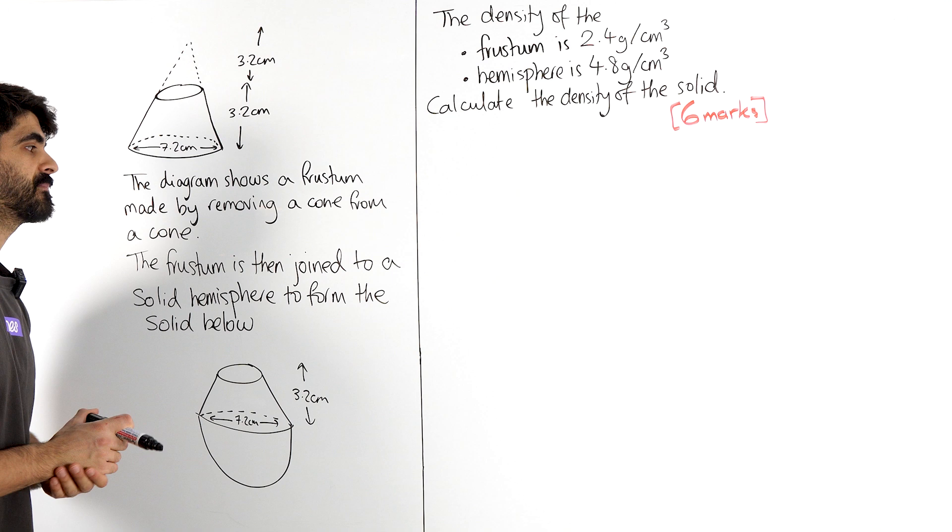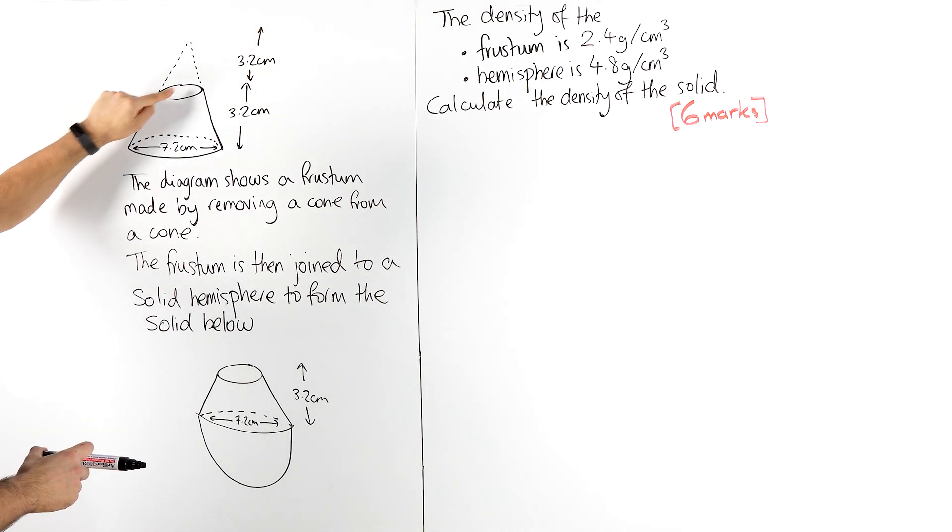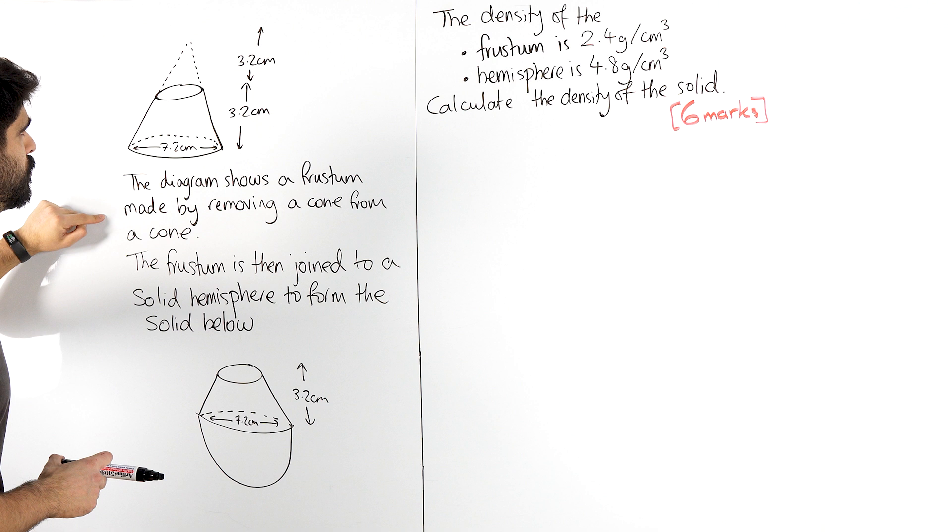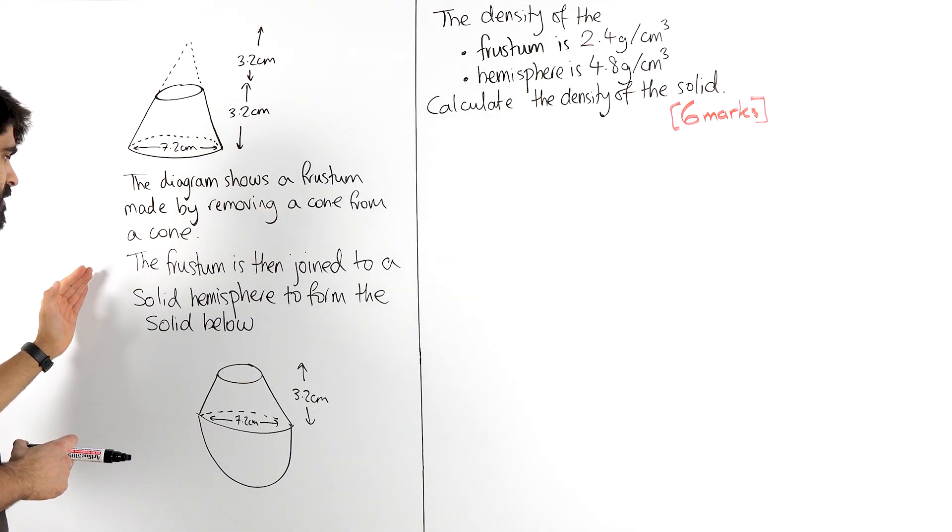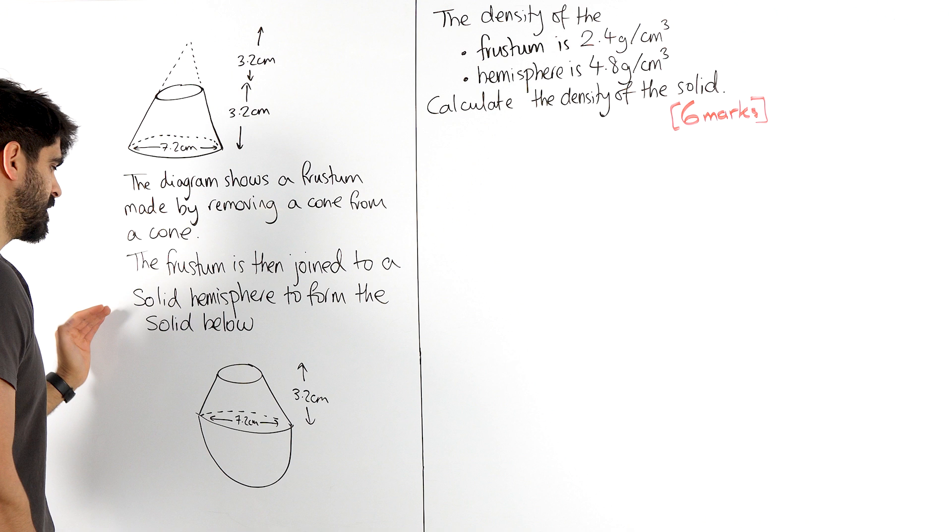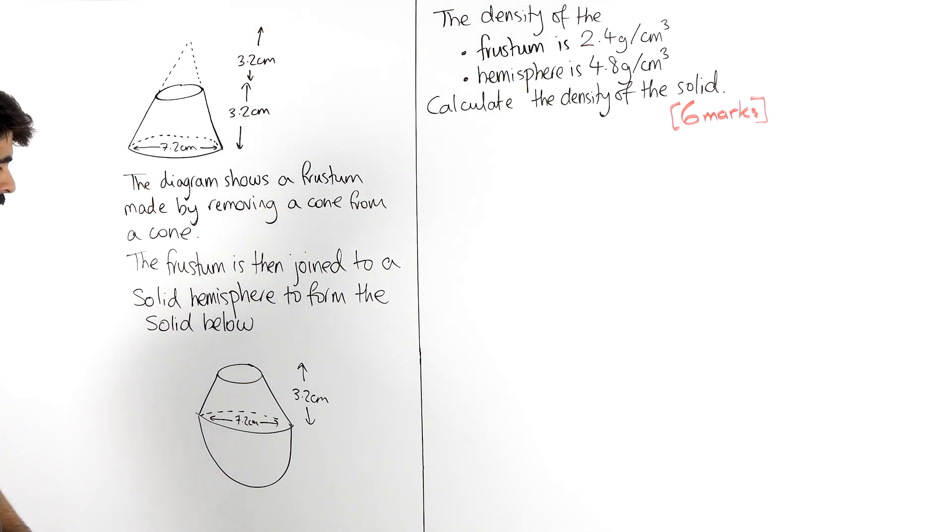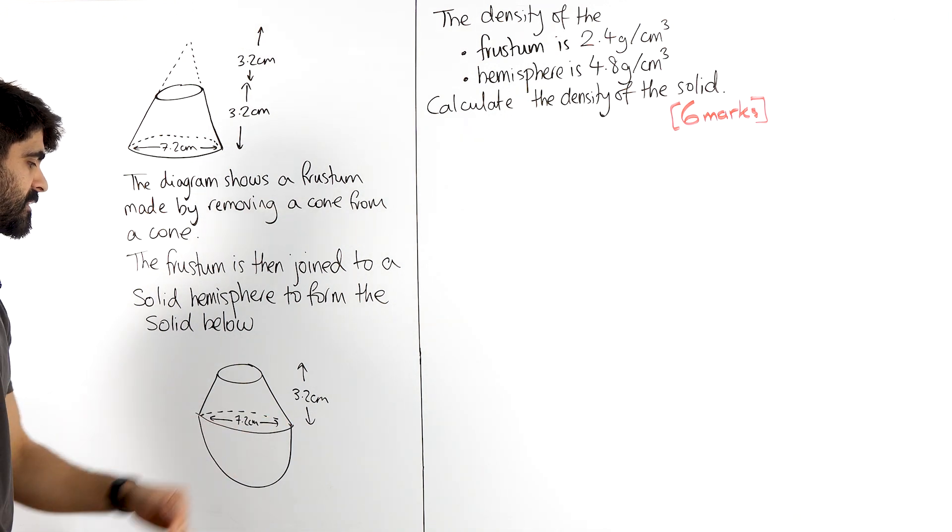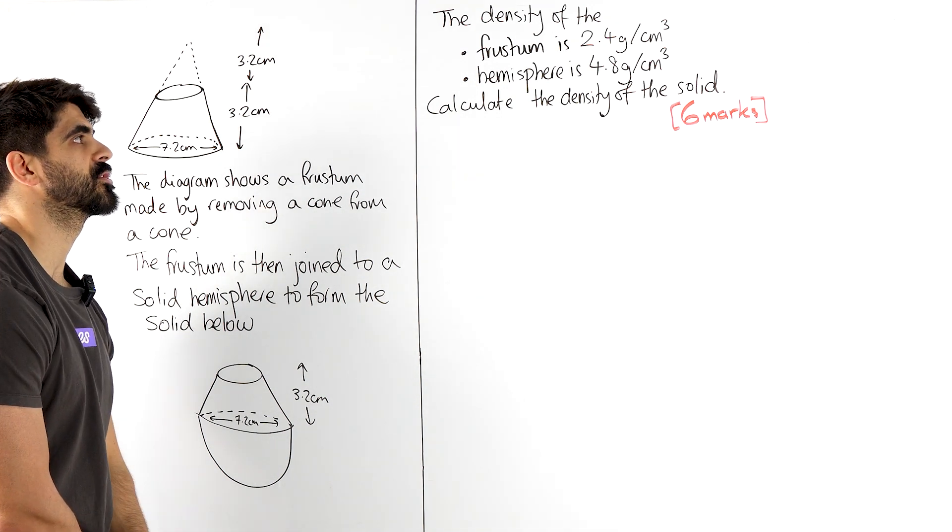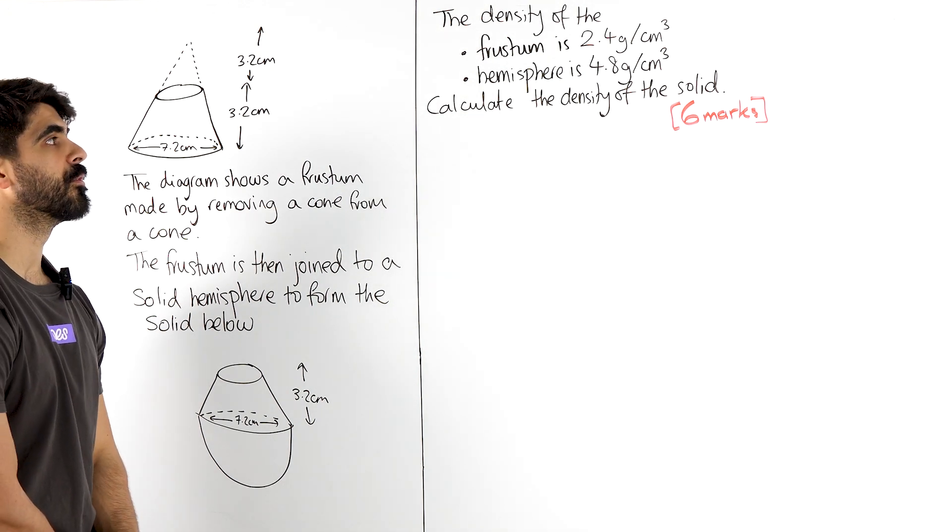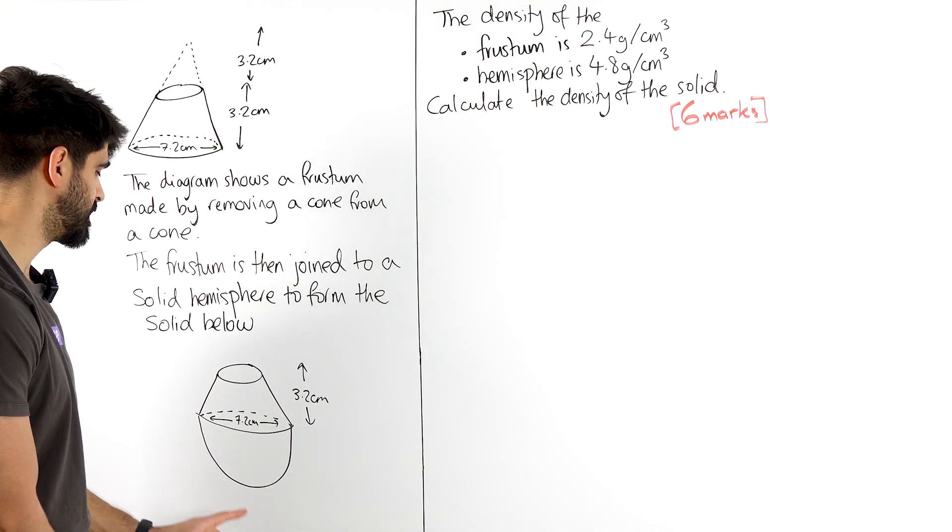So what's all this? It's saying the diagram shows a frustum made by removing a cone from a cone. So you can see here they've taken this cone out from this larger cone. The frustum is then joined to a solid hemisphere to form this solid shown below. You can see it has the same diameter and the cone is just sitting very nicely on top of it. It says the density of the frustum is 2.4 grams per centimeters cubed. The hemisphere density is 4.8 grams per centimeters cubed. Calculate the density of this solid.